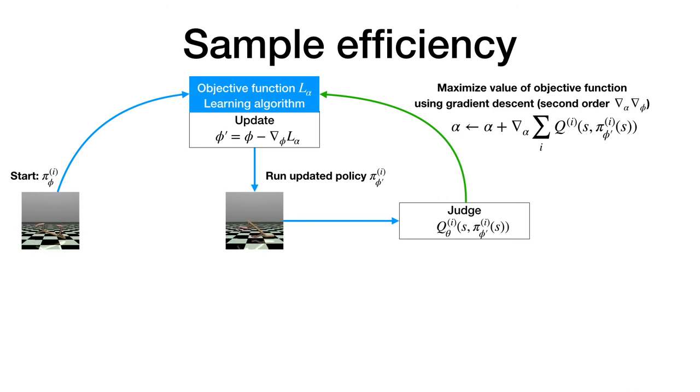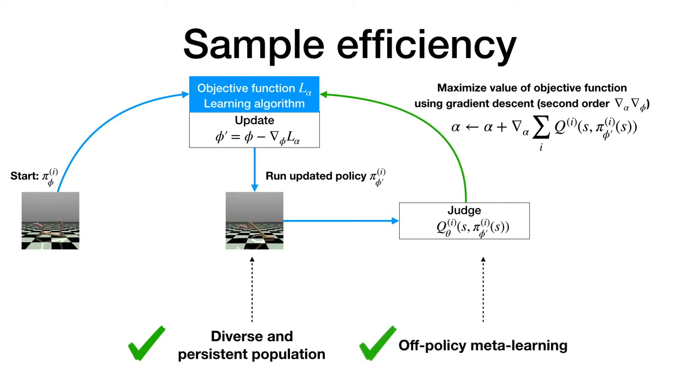Because of this formulation, we don't have to discard the policies after each meta-learning step. Instead, we maintain a diverse and persistent population of policies and make few updates to each agent for a single meta-update. Further, by using q values, we can increase the meta-learning sample efficiency through off-policy data.